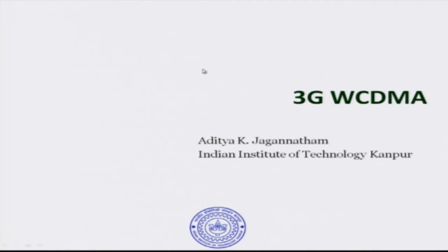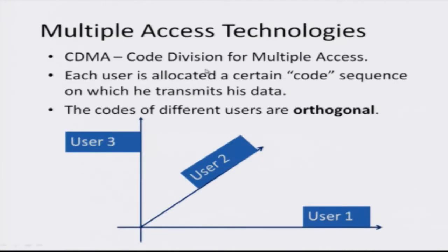We now look at a more advanced standard, that is a third generation standard which is known as WCDMA, which stands for wideband CDMA. CDMA is a very interesting multi-user technology; CDMA stands for code division multiple access. As we have seen, FDMA is based on division in frequency, TDMA is based on division in time, while CDMA is based neither on division in time or frequency, but where different users are assigned different codes.